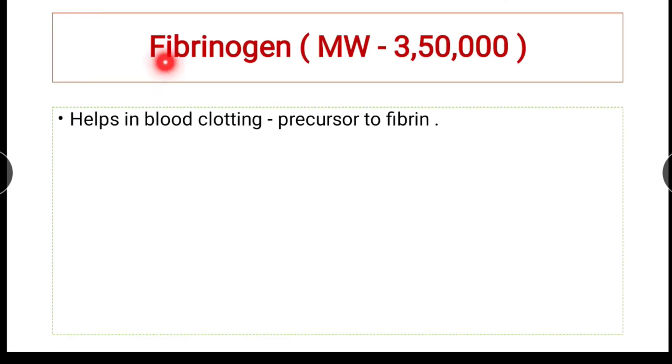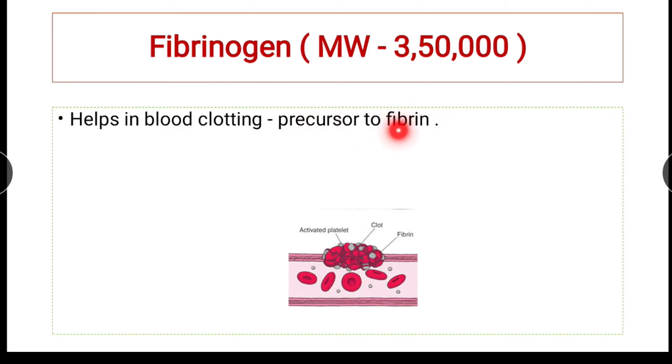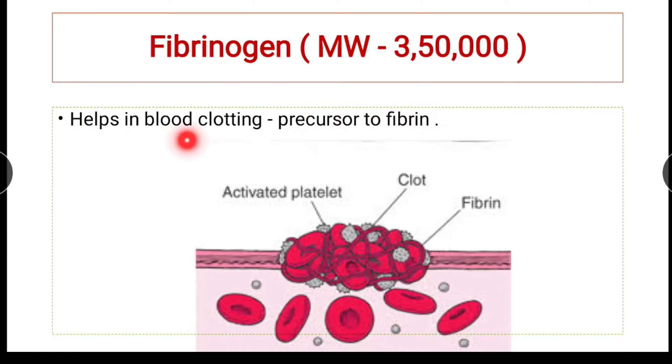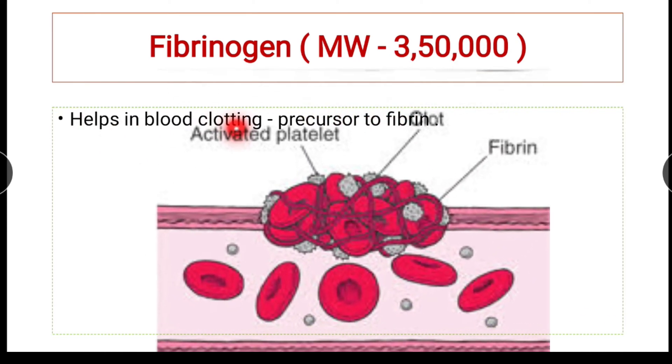Looking at fibrinogen: it has a molecular weight of 350,000 daltons. It is the precursor to fibrin, and thus helps in clotting.